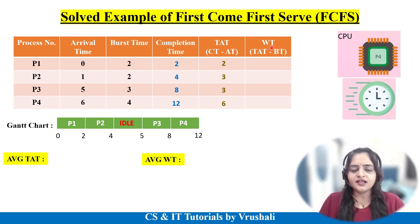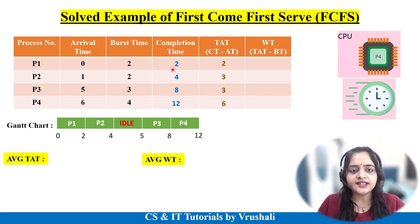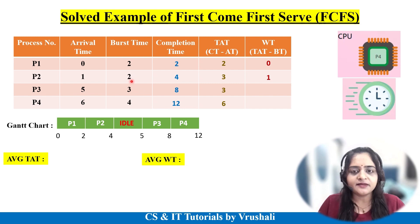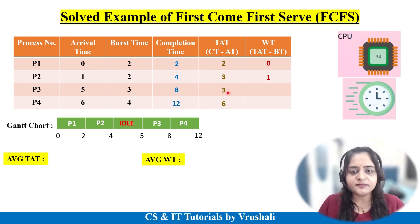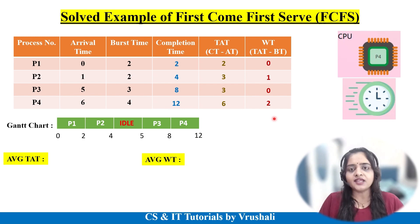Next, calculate waiting time using the formula: turnaround time minus burst time. P1: 2 − 2 = 0 (no waiting). P2: 3 − 2 = 1 (waited 1 hour). P3: 3 − 3 = 0. P4: 6 − 4 = 2 (waited 2 hours). In this way, you find the completion time, turnaround time, and waiting time for each process.